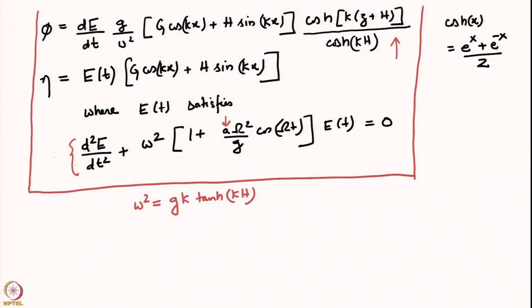This is the Mathieu equation, whose stability chart we examined earlier in this course. In the next video we will analyze this Mathieu equation further — explaining what instability means for the fluid problem and discussing practical applications, particularly for atomization, of this forced vibration problem.